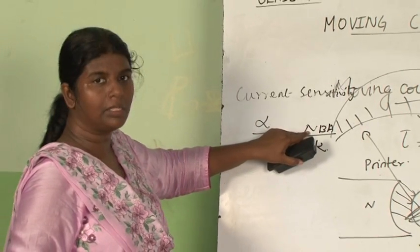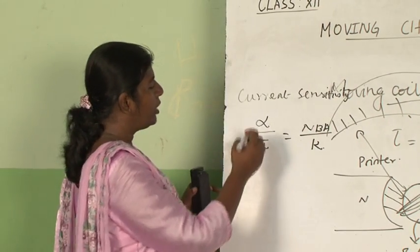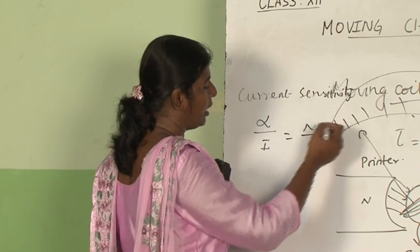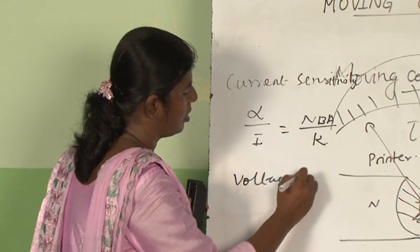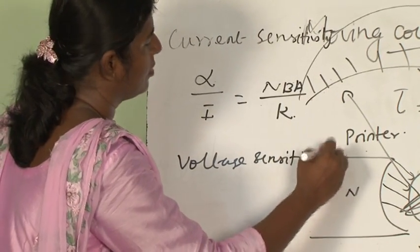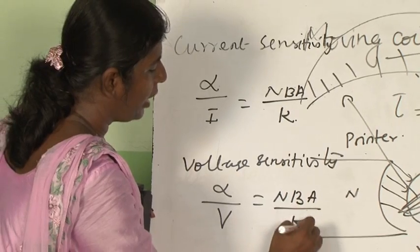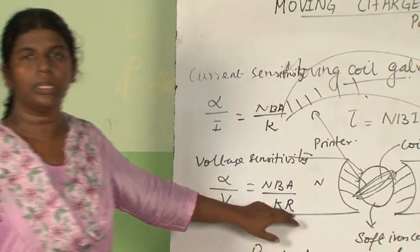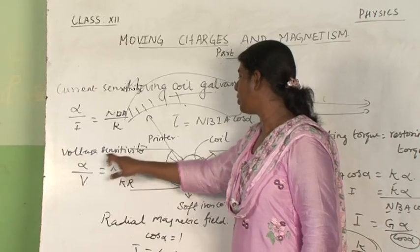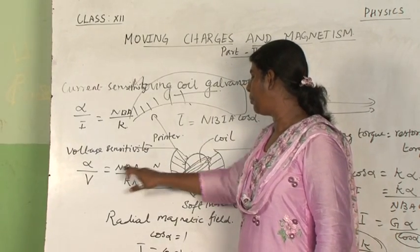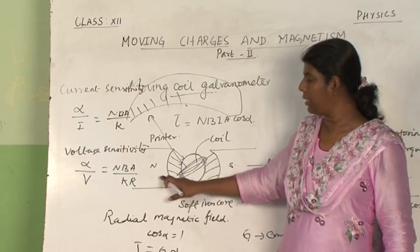Here K is the constant, N is the number of turns, B is the magnetic field, and A is the area of the coil. Current sensitivity is directly proportional to number of turns, magnetic field, and area, and inversely proportional to the constant K. Voltage sensitivity is alpha by V, that is NBA divided by K into R, where R is the resistance of the coil. Voltage sensitivity is directly proportional to NBA and inversely proportional to K and the resistance in the coil.